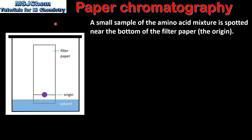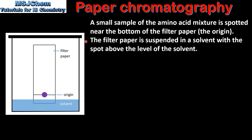Let's start by looking at paper chromatography. A small sample of the amino acid mixture is spotted near the bottom of the filter paper, which is called the origin. The filter paper is suspended in a solvent with the spot of amino acids above the level of the solvent.